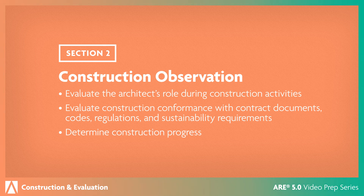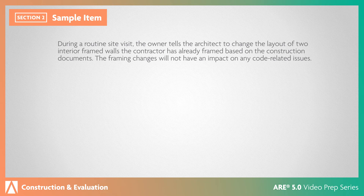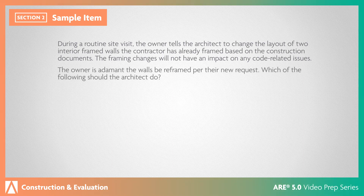Let's look at a sample question. During a routine site visit, the owner tells the architect to change the layout of two interior framed walls the contractor has already framed based on the construction documents. The framing changes will not have an impact on any code-related issues. The owner is adamant the walls be reframed per their new request. Which of the following should the architect do?